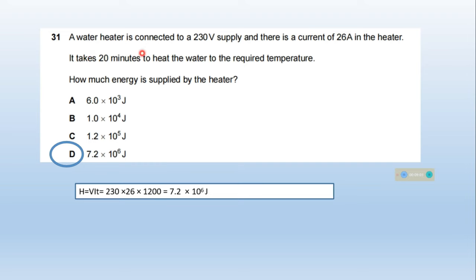A water heater is connected to a 230 volt supply with a current of 26 amperes. It takes 20 minutes to heat the water to the required temperature. How much energy is supplied by the heater? Heat energy H equals VIT. V is 230 volts, I is 26 amperes, and time is 20 minutes, which is 1200 seconds. H value is 7.2 times 10 to the power 6 joules. Option C is correct.